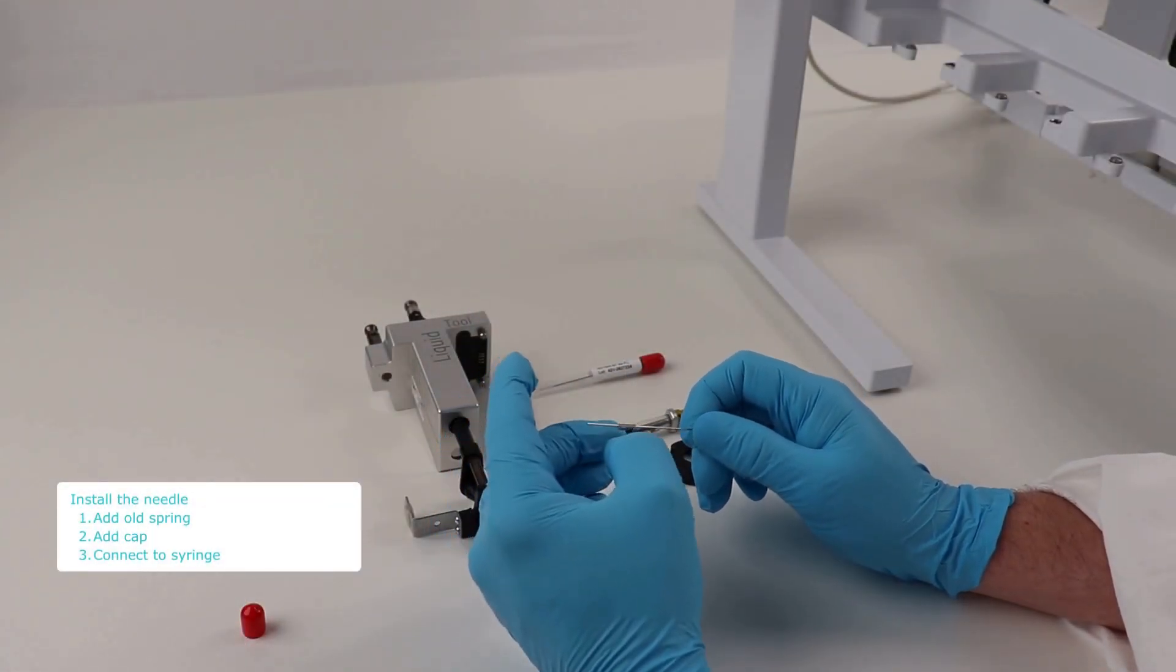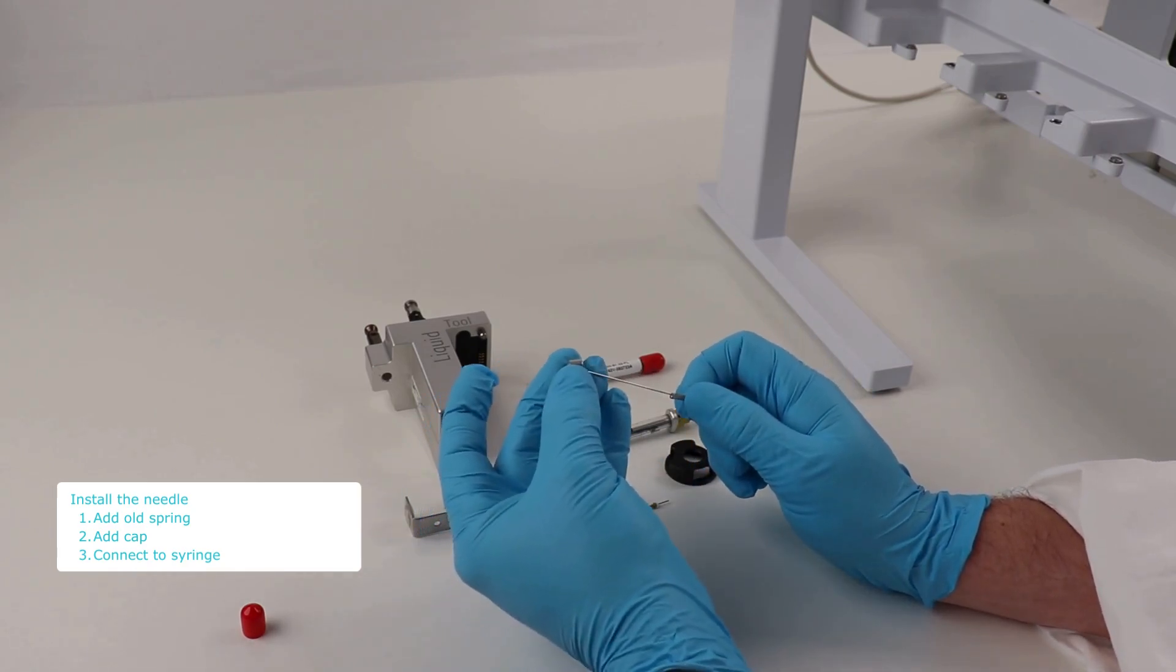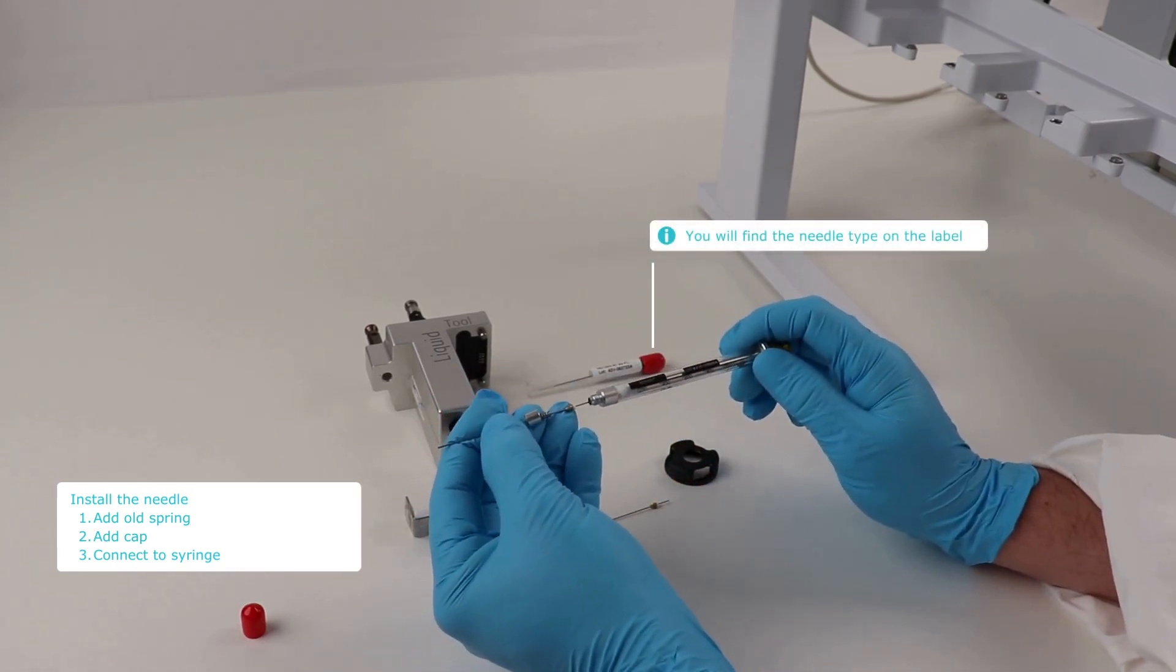Now, install the new needle by adding the old spring and needle cap. Then, screw all parts on the syringe finger tight.